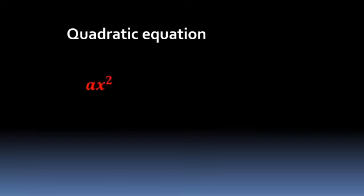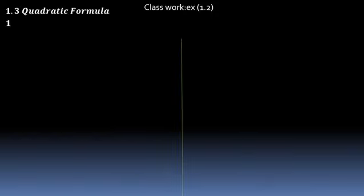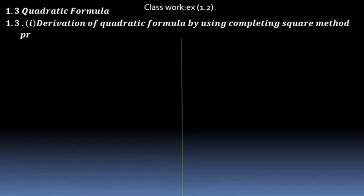Quadratic equation: ax² + bx + c = 0. This is the standard quadratic equation. The quadratic formula is x = (−b ± √(b² − 4ac)) / 2a. Classwork: Exercise 1.1 — Quadratic Formula 1.3. Derivation of quadratic formula by using completing square method.